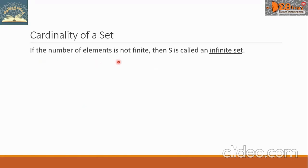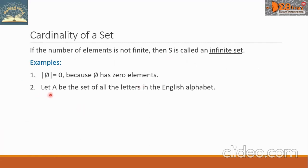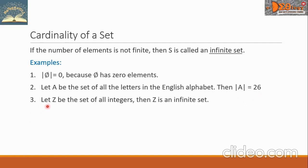If the number of elements is not finite, then set S is called an infinite set. Examples: the cardinality of a null set equals 0, because the null set has 0 elements. Second, let A be the set of all letters in the English alphabet — then the cardinality of set A equals 26. Number 3, let Z be the set of all integers — then Z is an infinite set.